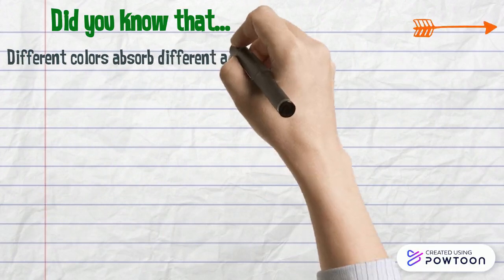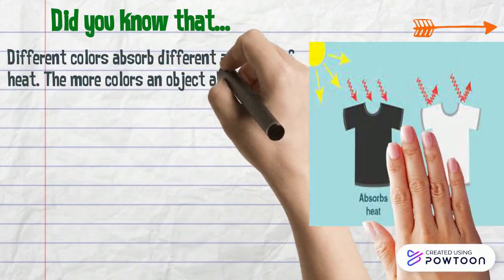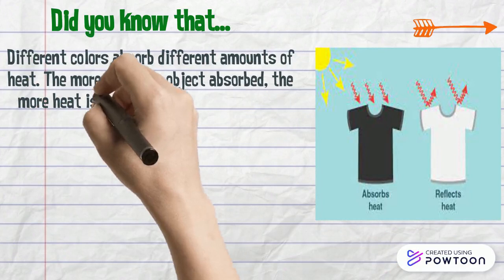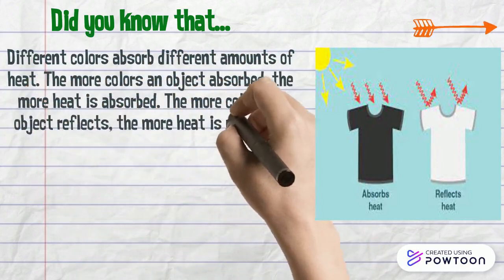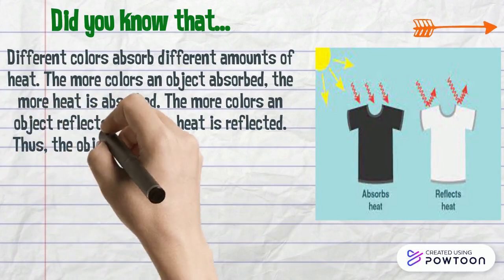Different colors absorb different amounts of heat. The more colors an object absorb, the more heat is absorbed. The more colors an object reflects, the more heat is reflected.